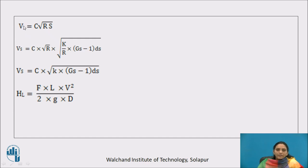Now derive velocity. Use Chezy equation here: V equals C under root of R times S, it is the Chezy equation. For self-cleansing velocity, take V equals Vs and calculate self-cleansing velocity. Put the value of slope in this equation. Vs equals C under root of R into under root of K upon R into Gs minus 1 into ds. That under root of R will get cancelled. So we will get the equation for self-cleansing velocity: C under root of K into Gs minus 1 into ds.